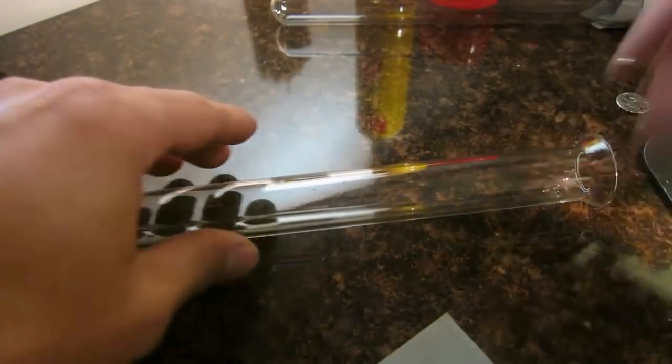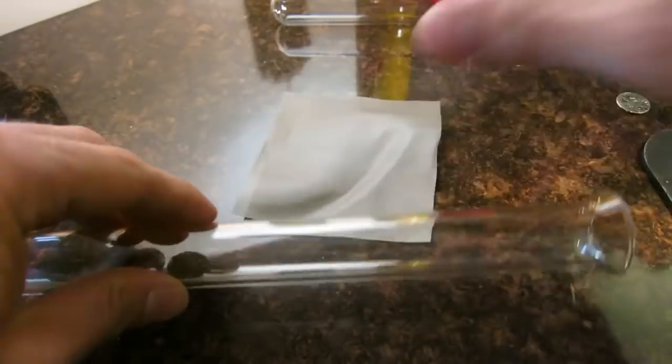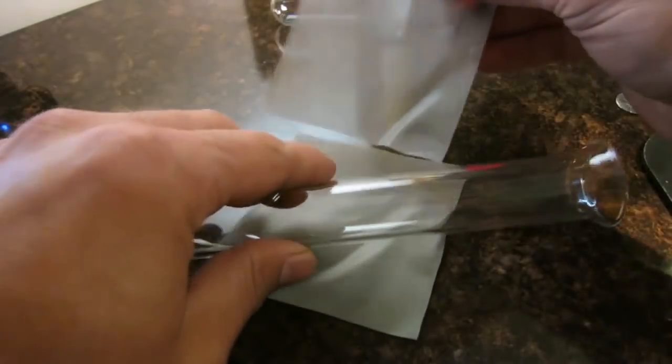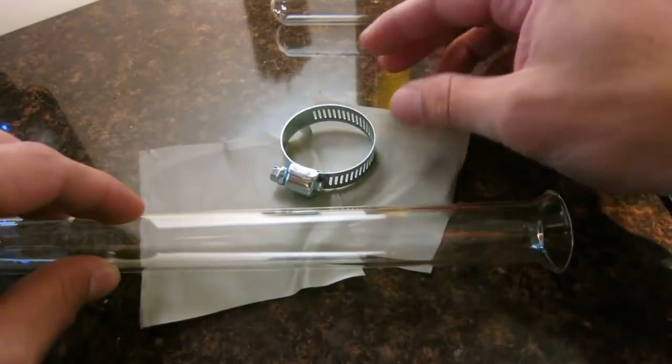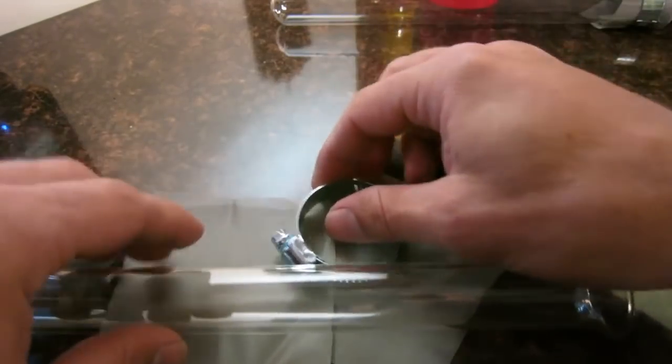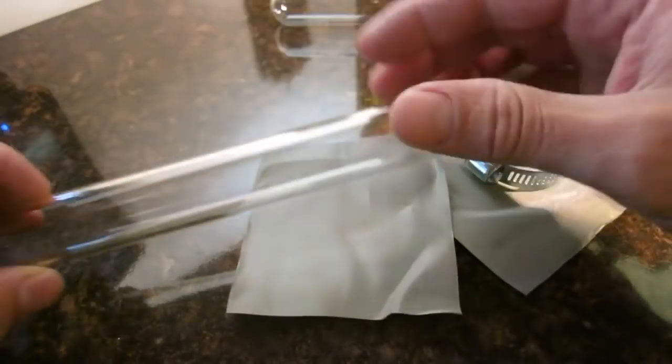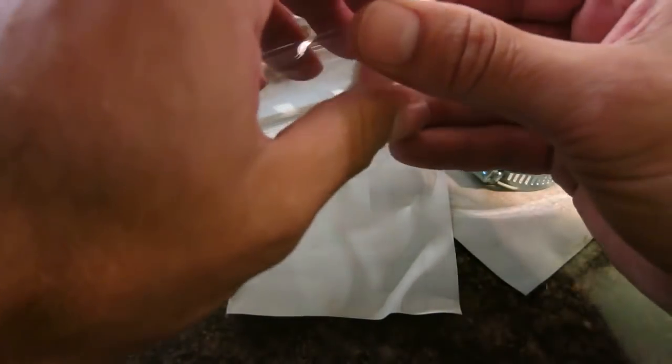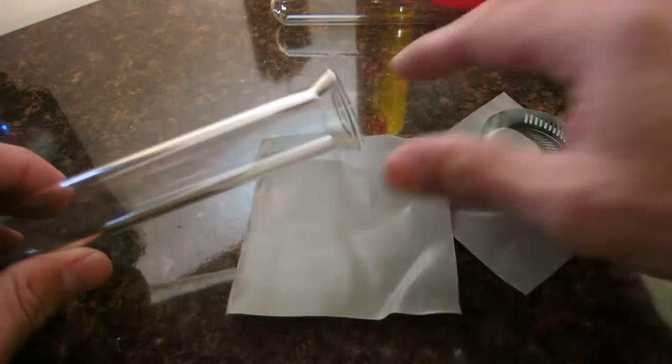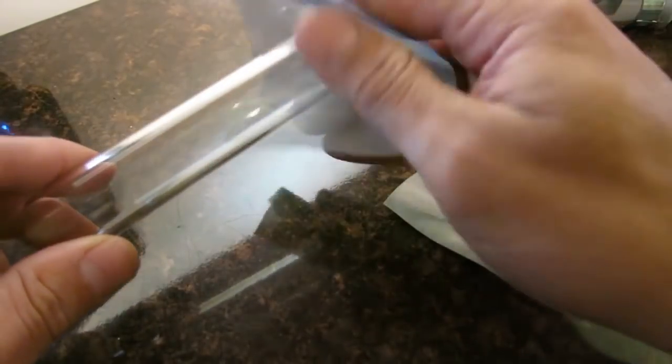The kit comes with an extractor tube, two 50 mesh screens that are four inches by four inches, and a t-bolt clamp. You're going to fill this with whatever you're getting your concentrate from. This full tube will hold about an ounce. You're gonna put the top on right here just like this.